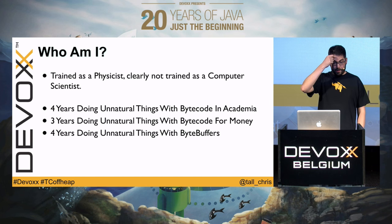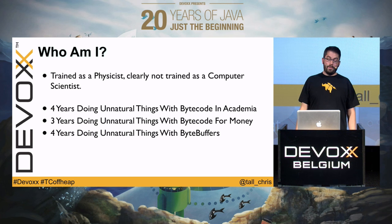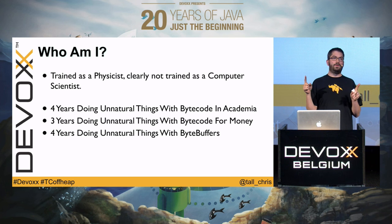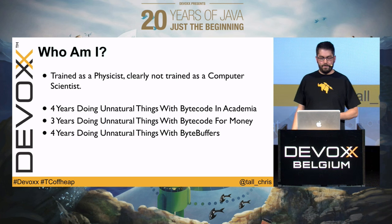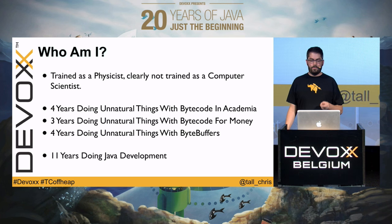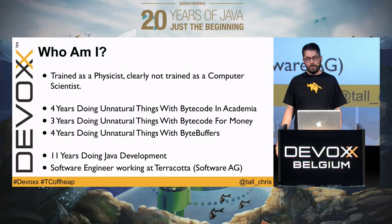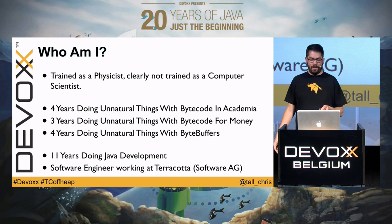I then spent four years doing unnatural things with ByteBuffers, which is what we're going to talk about. That was originally with Terracotta as part of EHcache. In total, I spent 11 years doing Java development. I still work for Terracotta as part of Software AG, and I call myself an engineer — not really an engineer. Developer, maybe. Hacker, probably.